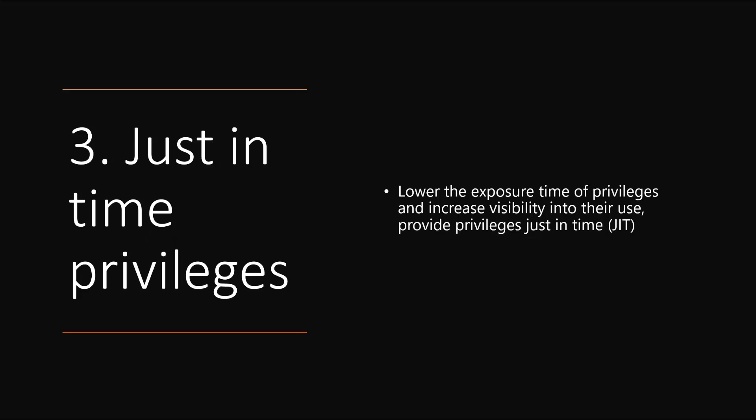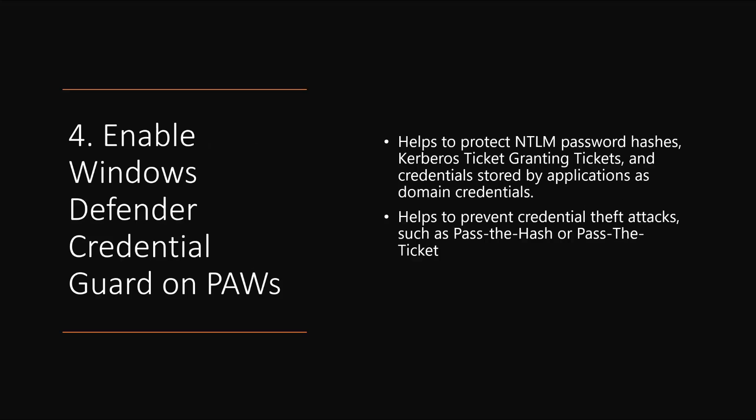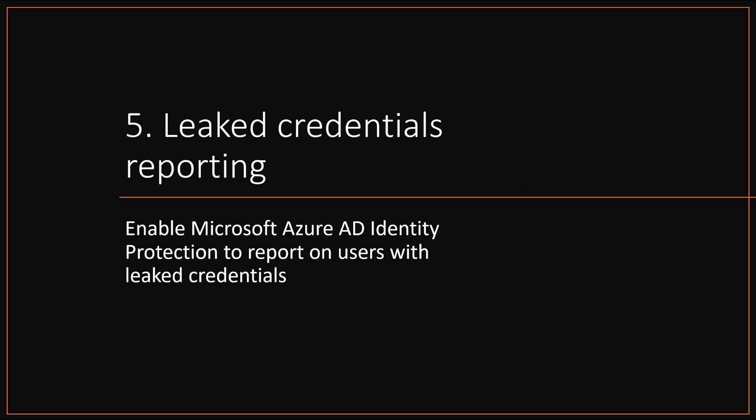Just-in-time privileges: don't give admins standing admin access — let them request admin access when they need it. Enable credential guard, which is built into Windows 10 Enterprise. This can actually stop pass-the-hash and pass-the-ticket attacks. It stores your credentials in a secured place in memory. Think of it like putting your car keys in a safe in your bedroom closet rather than leaving them on the kitchen counter — that's like using credential guard. Azure Active Directory Identity Protection, part of Azure AD Plan 2, can monitor the dark web for leaked credentials and monitors public places.